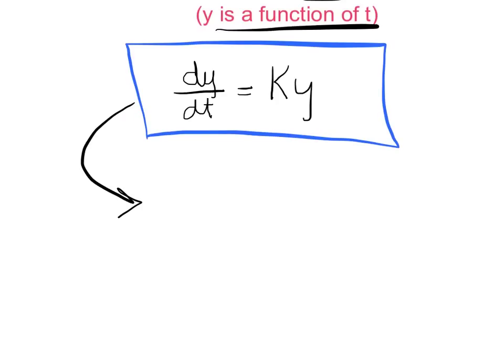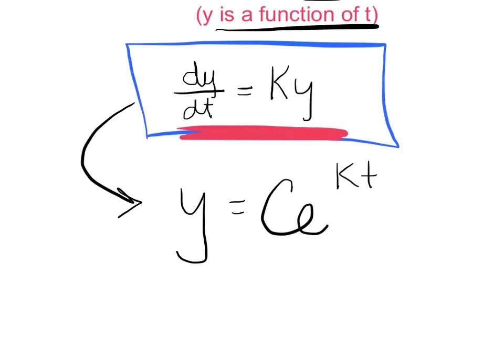If you don't have that memorized by tomorrow, we're in some trouble here, because you're going to be costing yourself quite a bit of points. We need to know that this converts to y equals Ce^(kt).